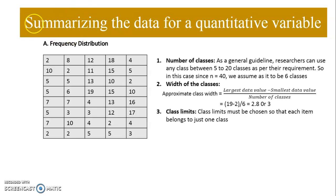The first step is to identify the number of classes. As a general guideline, researchers can use any number between 5 to 20 classes depending on data requirements and sample size. In our case, since N is 40, we assume 6 classes only because it is not much data. The next step is to ascertain the width of the class using the formula: largest data value minus smallest data value, divided by number of classes.